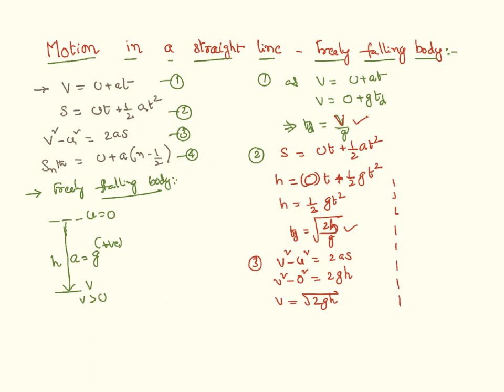I can write the fourth equation also: s_nth = h_nth. Since u is zero and a is g, the distance travelled by the body in the nth second is g(n - ½).